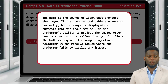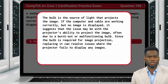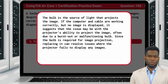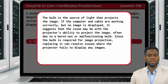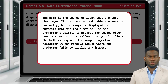The bulb is the source of light that projects the image. If the source device and cable are working correctly but no image is displayed, it suggests that the issue may be with the projector's ability to project the image, often due to a burnt-out or malfunctioning bulb. Since the bulb is required for image projection, replacing it can resolve issues where the projector fails to display any images.